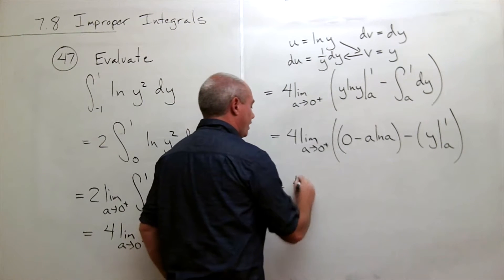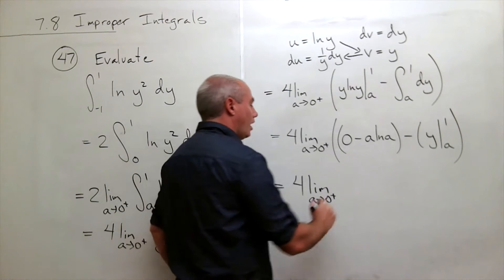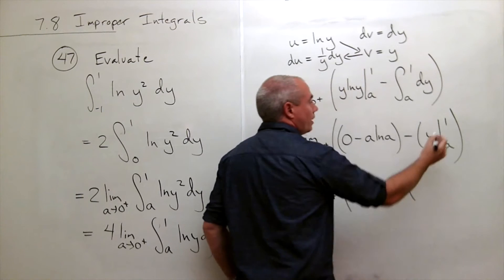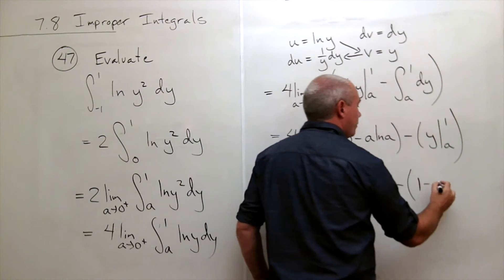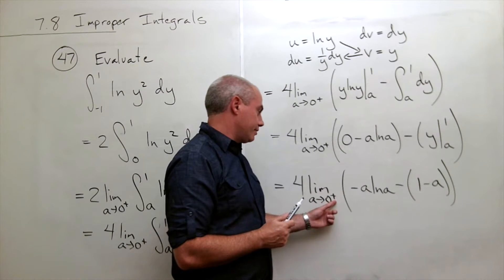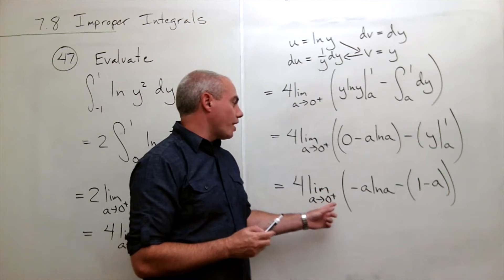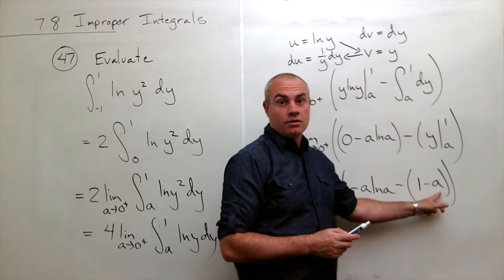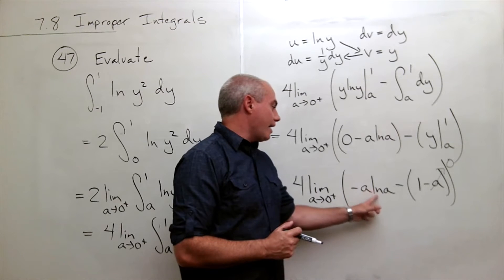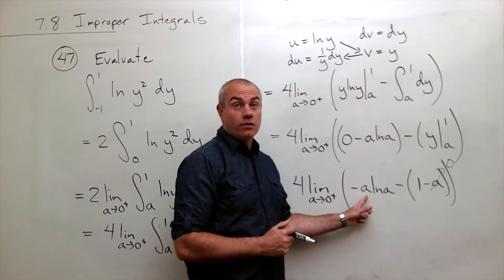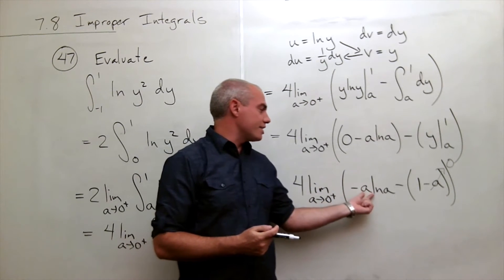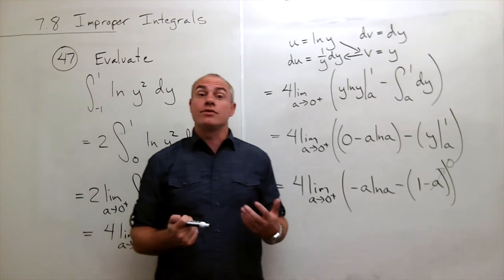Let's plug that in. I still have 4 times the limit as a goes to 0 from the right of, what do we have? We have negative a ln a minus, now we plug in 1 and we get 1 minus, plug in a, we get a. Now we're ready to take the limit as a goes to 0 from the right. As a goes to 0 from the right, it's pretty clear that this guy is 0. But what about this guy? I've got a ln a. Well if I plug in 0 for a, I get 0. If I plug in 0 for a here, I get ln of 0. And ln of 0 is kind of like negative infinity. So I get like a 0 times a negative infinity, which is an indeterminate form. So I need to use L'Hopital's rule here.